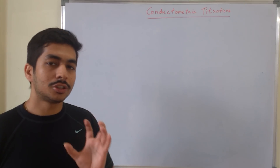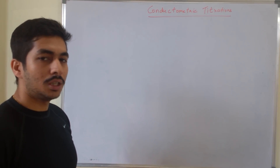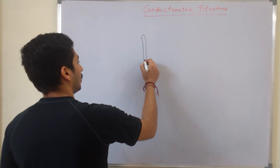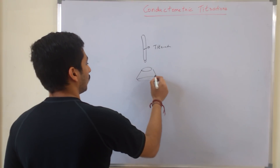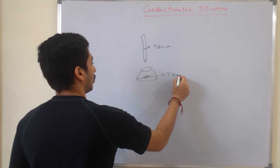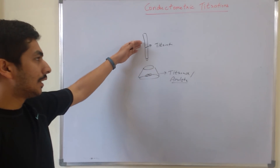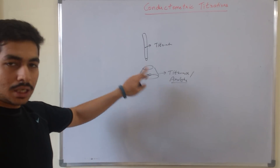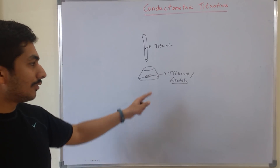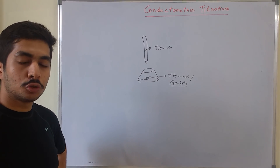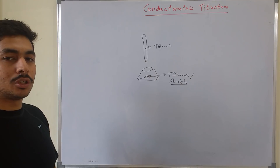Conductometric titrations basically measure the conductance of the solution. In conductometric titrations, you have a burette — whatever you have in the burette is called your titrant. Then we have a conical flask, and whatever solution you have in the conical flask is known as the analyte, because you're analyzing it. In the burette you have a titrant. We measure the conductance of this analyte with the help of an instrument called a conductometer, to find out the endpoint or equivalence point.